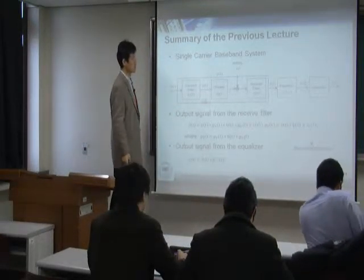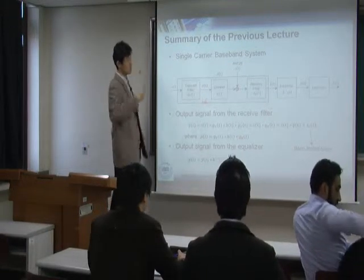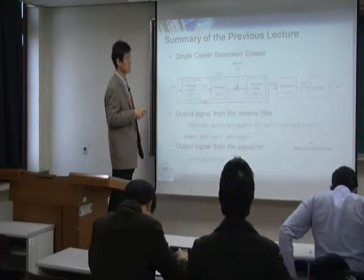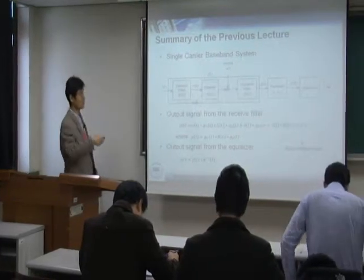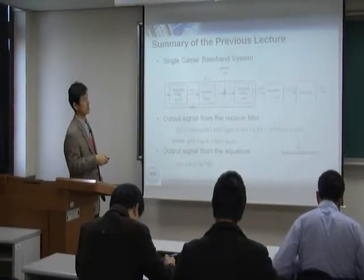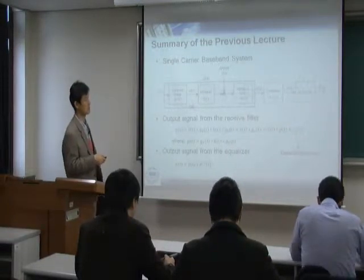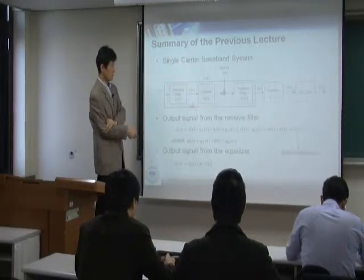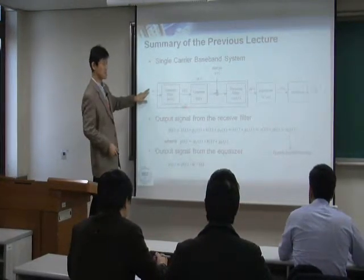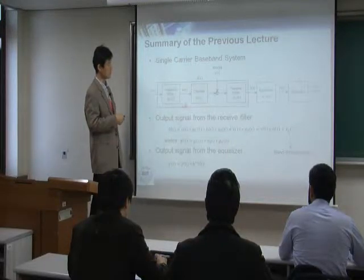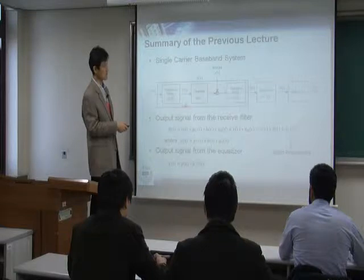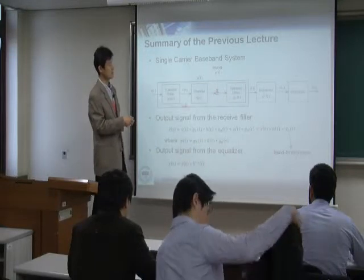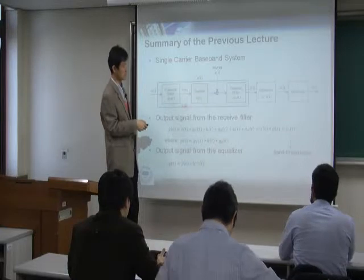Let's recap last lecture. We learned single carrier systems and multi-carrier systems, starting from the single carrier baseband system — a simple system with a transmit filter, a receive filter, and at the receiver an equalizer for the multipath channel, to make a decision for the transmit symbol S(T). The signal is convolved with the transmit filter, channel, and receive filter, and noise added through the channel also goes through the receive filter.